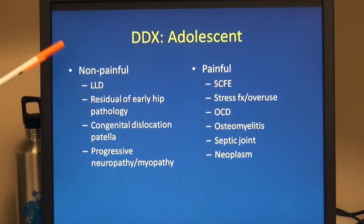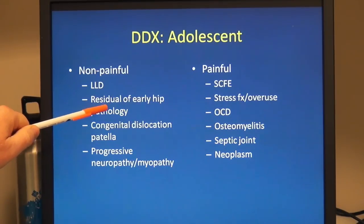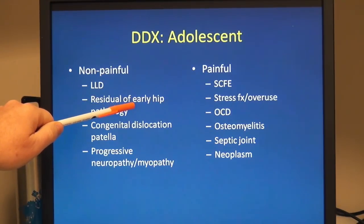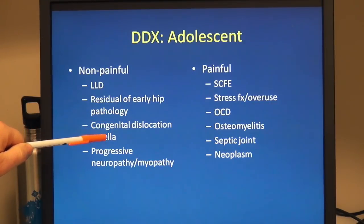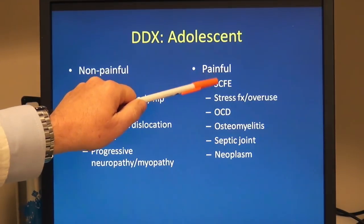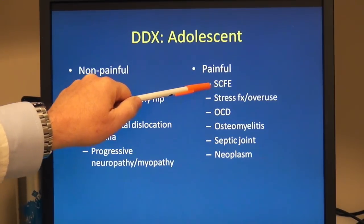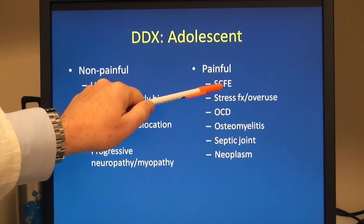In the adolescent, we sometimes still make initial diagnoses of limb length discrepancies, and we see residual effects of early hip pathology — subtle DDH that may or may not have been identified in infancy or childhood can become symptomatic with sports and other activities. We sometimes see congenital dislocation of the patella fairly late, and progressive neuropathies and myopathies can present in this age range. The big one in this age group for hip, thigh, and knee pain is to consider and rule out or identify slipped capital femoral epiphysis.